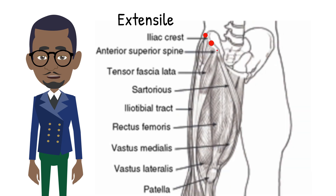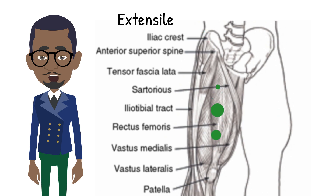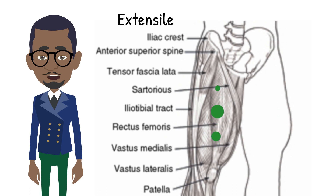Extension proximally is along the iliac crest, sometimes for bone graft. Distally, extension runs in line with the lateral border of the patella between rectus femoris and vastus lateralis — for example, in an intraoperative femoral fracture.